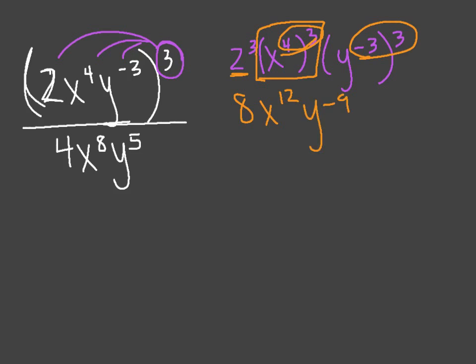So now if I rewrite my original problem, I have 8x to the power of 12, y to the negative ninth on the top, and I have the original bottom of my fraction.